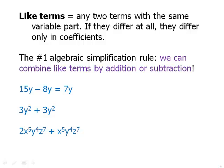3y squared plus 3y squared. Those are like terms. In fact, they're identical. So when we add, we just get 3 plus 3, which is 6, 6y squared.